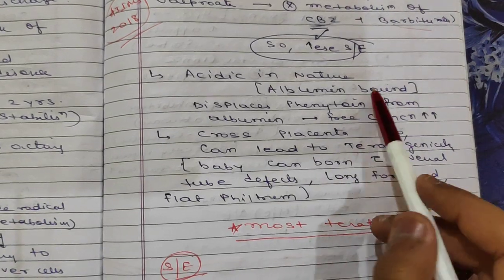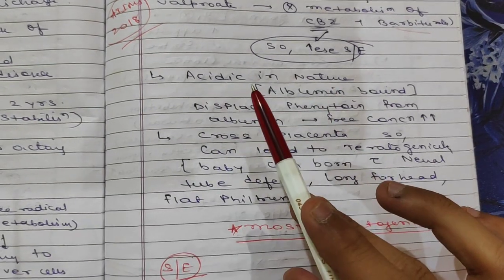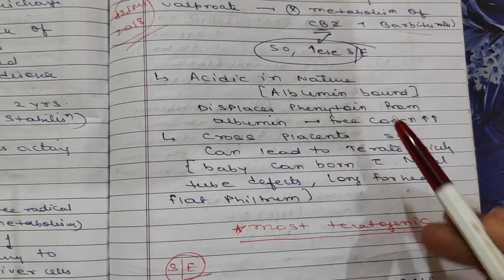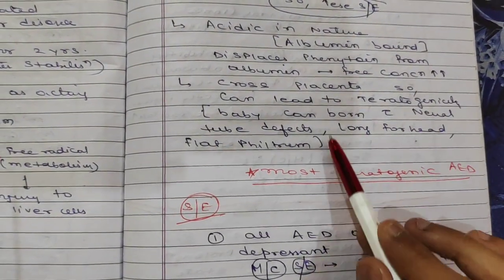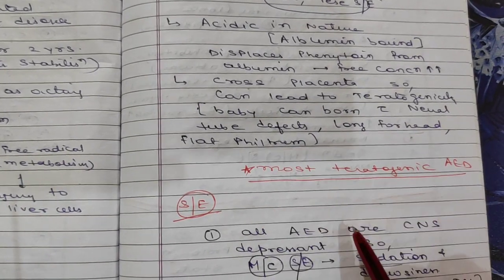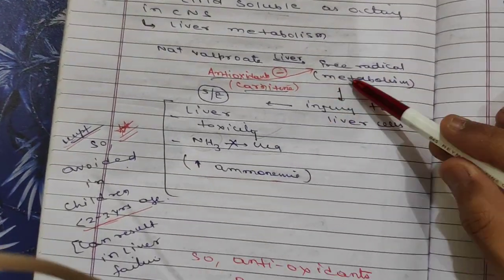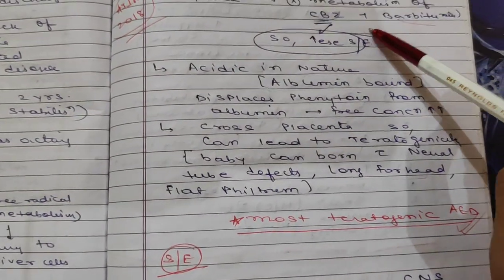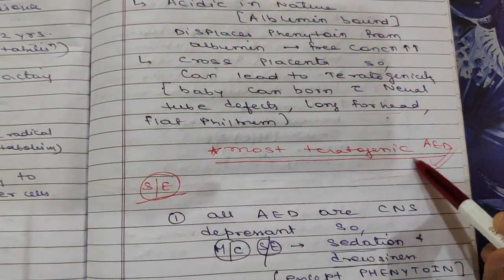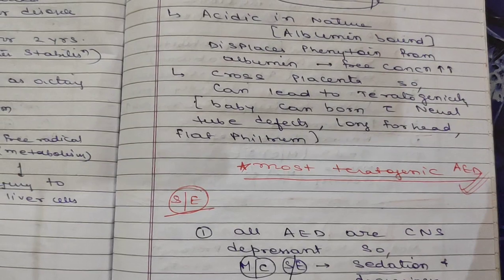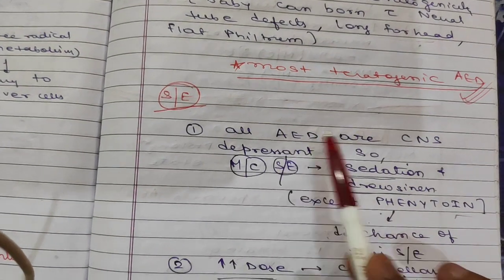Sodium valproate is acidic in nature and binds strongly to albumin, displacing phenytoin and potentially causing phenytoin toxicity. It also crosses the placenta, leading to teratogenesis — including neural tube defects, long forehead, and flat philtrum. It is the most teratogenic anti-epileptic drug. Key interactions to remember: free radical formation, CYP450 inhibition affecting carbamazepine and barbiturates, acidic nature causing phenytoin toxicity, and highest teratogenicity.